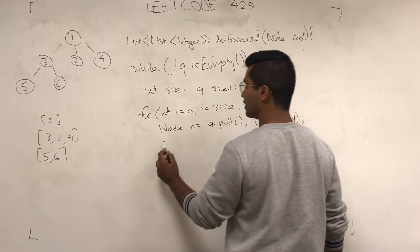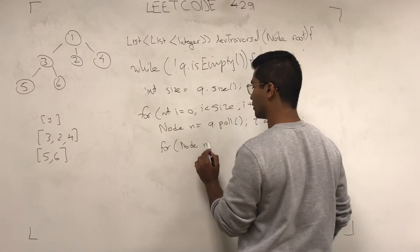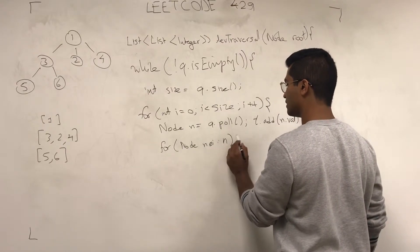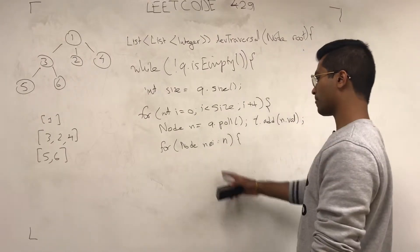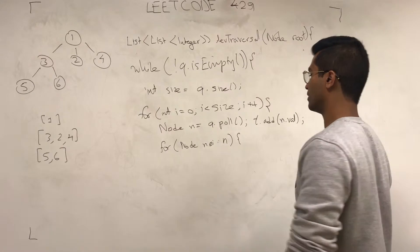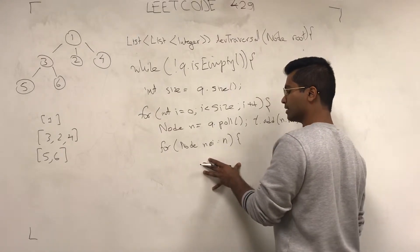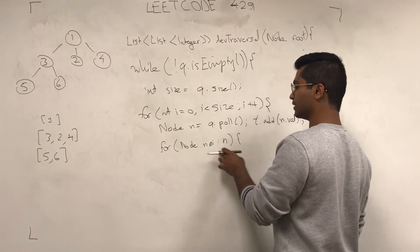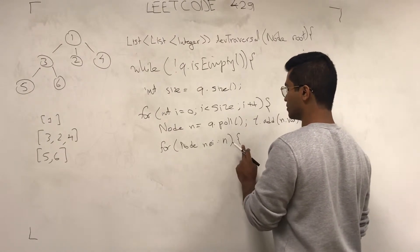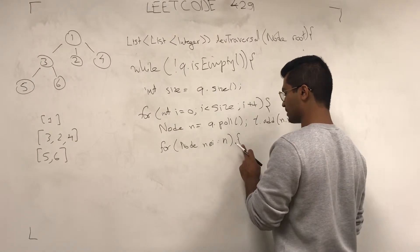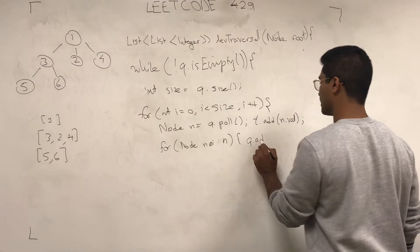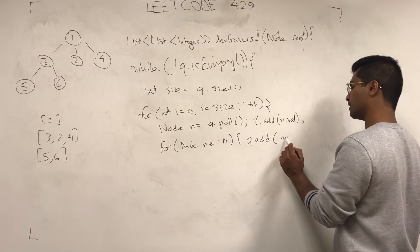And then, for node nei through n, now, we're going to check this guy's children. When we do that, this is going to have kids and it's going to go through each one. So, q.add(nei).